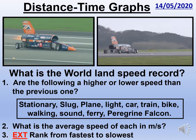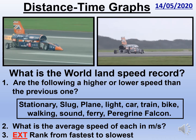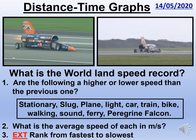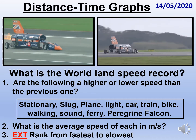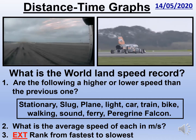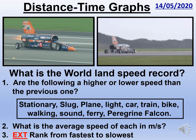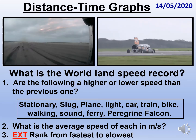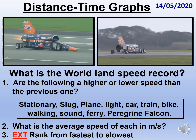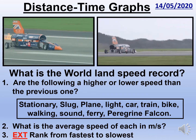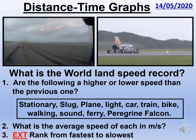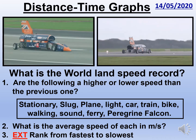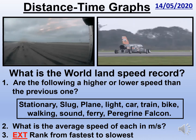Most of them are obviously stationary. Can you put them into order of whether they're going faster or slower than the previous one? Give you a few moments to think about that — you can pause the video. Does anybody have any idea what the average speed of each one is in meters per second? It's important to remember that meters per second is the unit of speed we use in physics. Above the slug is definitely not the fastest.